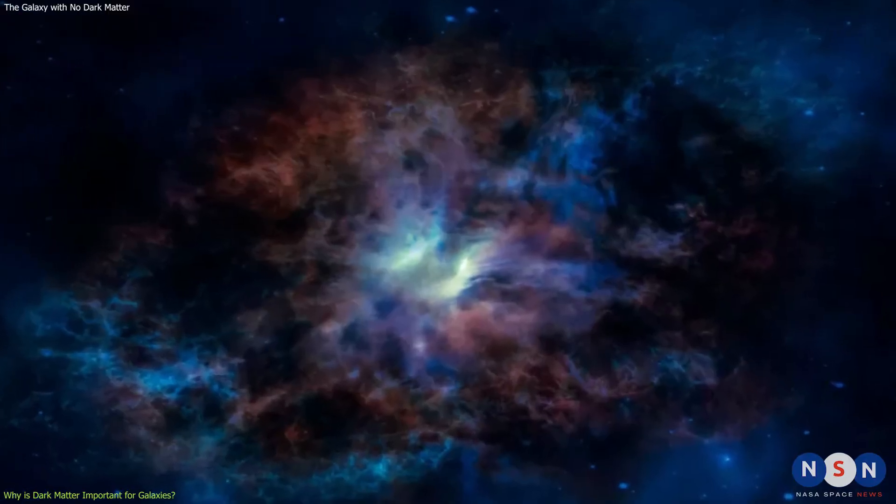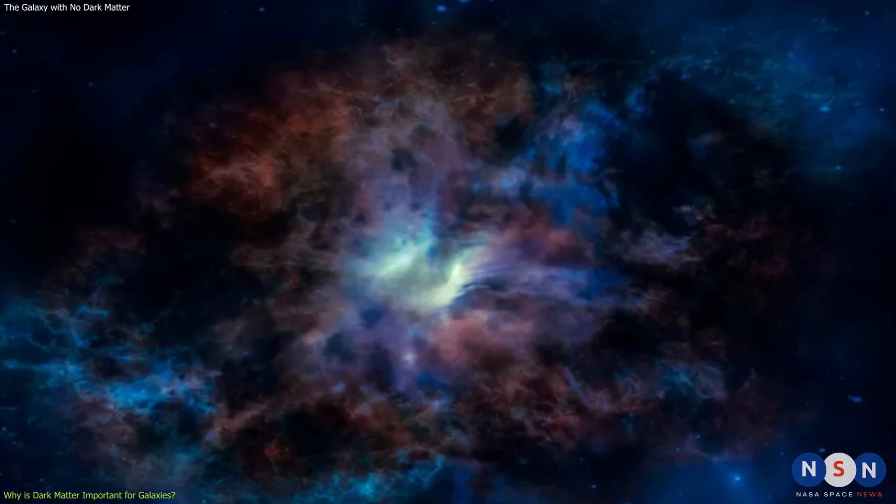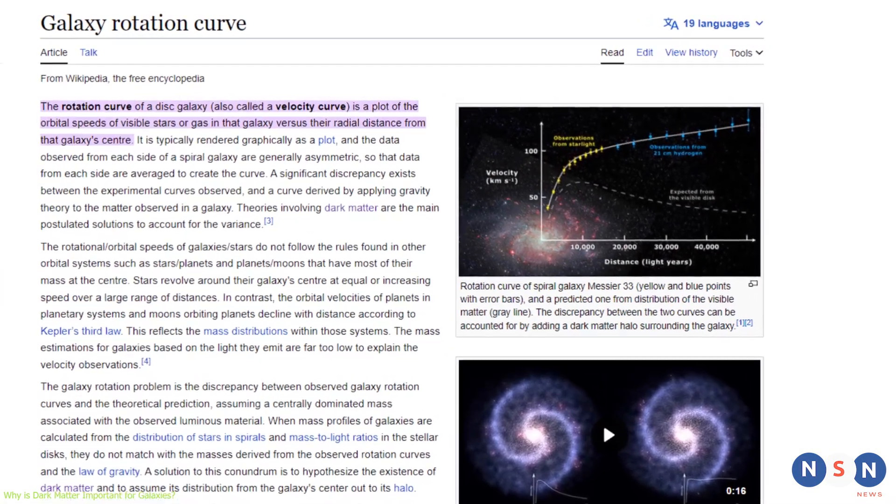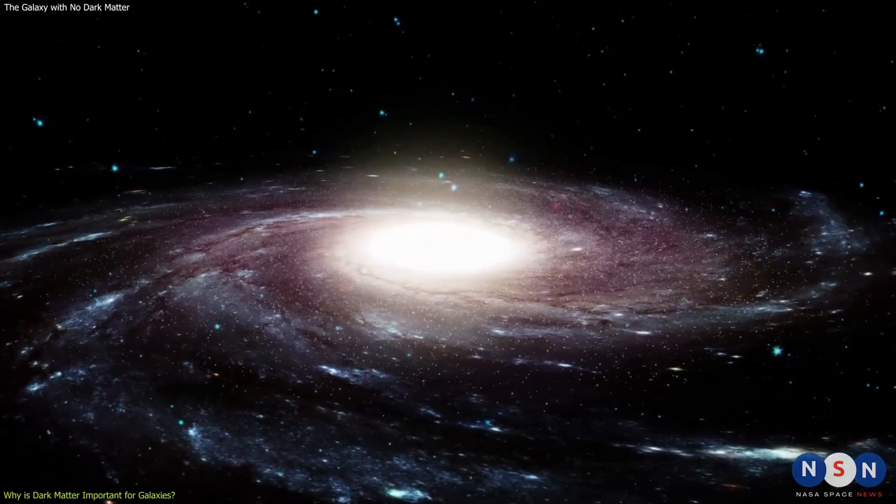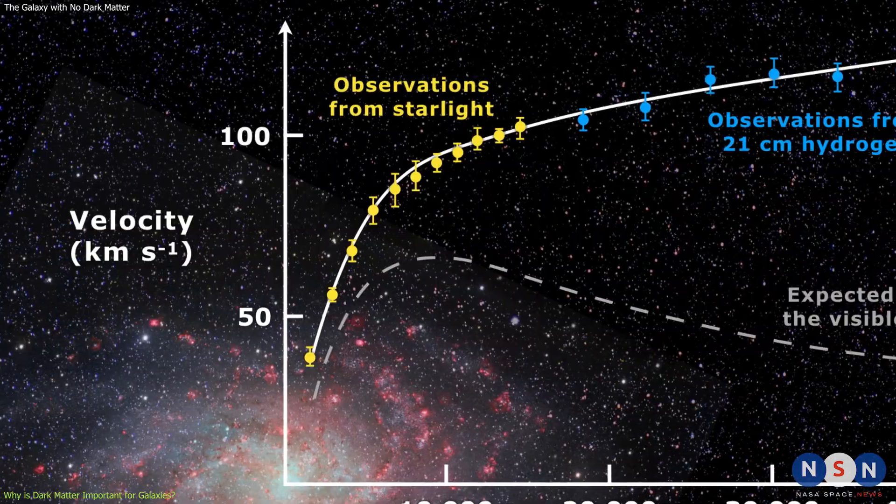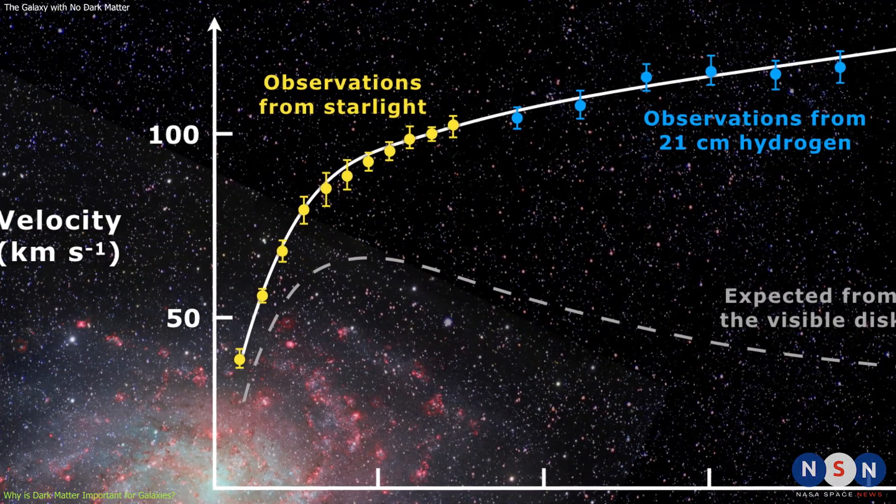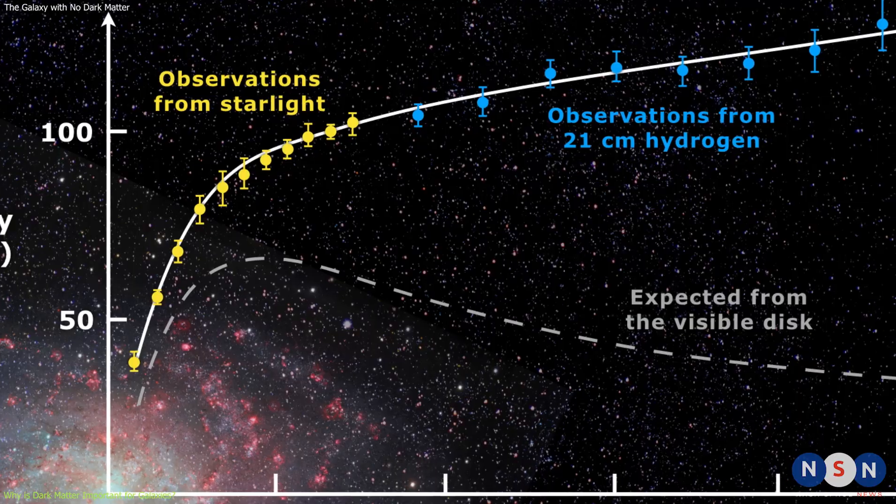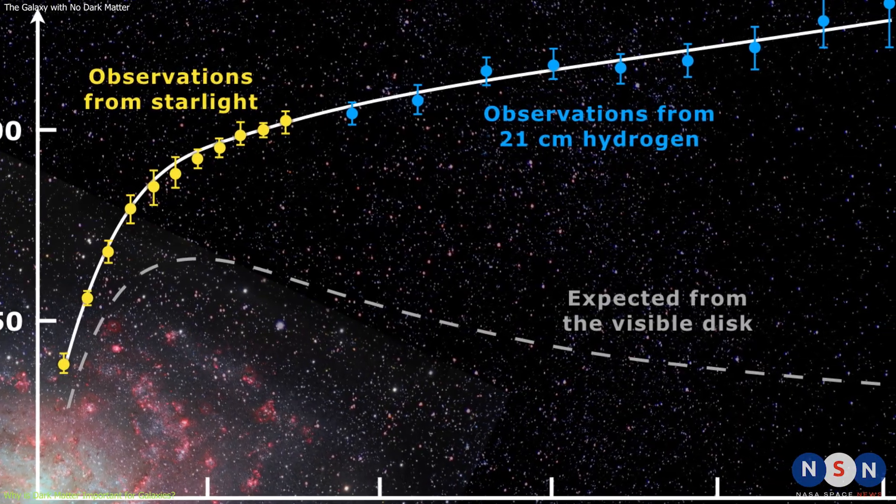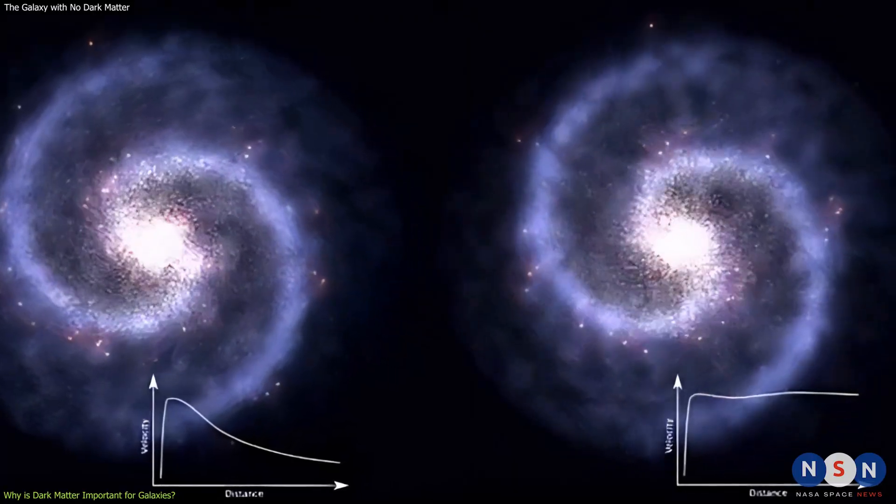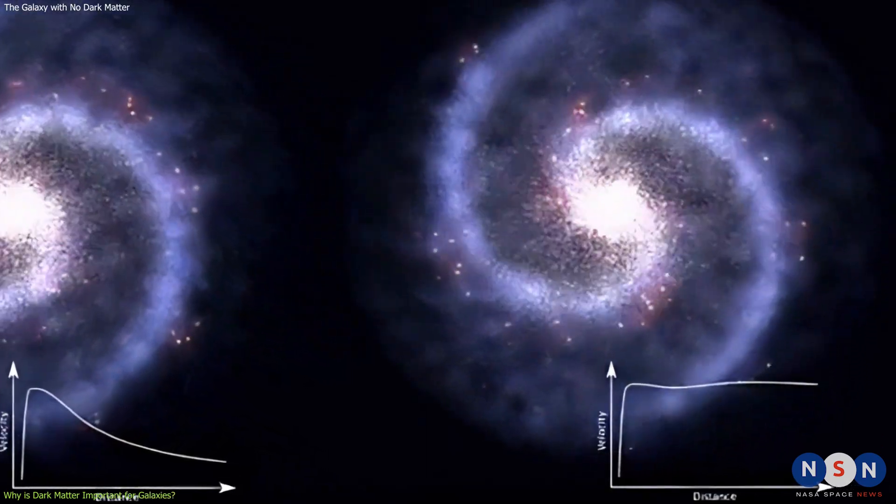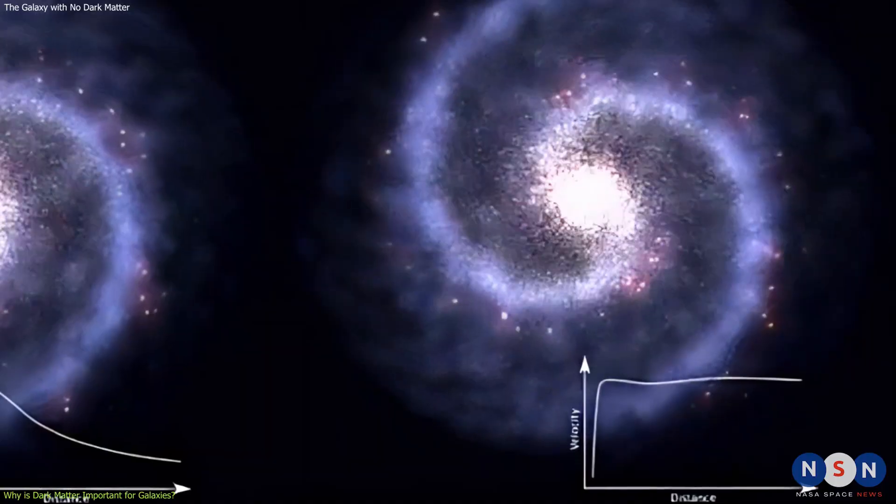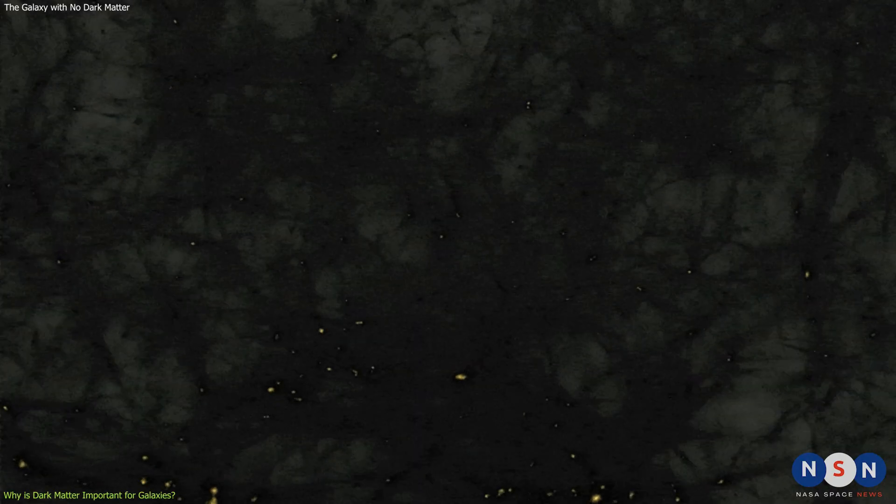Since then, many observations have confirmed the existence and importance of dark matter in galaxies. One of the most convincing evidence comes from galaxy rotation curves, which plot the rotational speed of stars and gas as a function of their distance from the galactic center. According to Newton's law of gravity, we would expect these curves to decline as we move away from the center, because there is less mass inside a given orbit. However, what we actually observe is that these curves remain flat or even rise at large distances, indicating that there is more mass than we can see. This extra mass is attributed to dark matter.